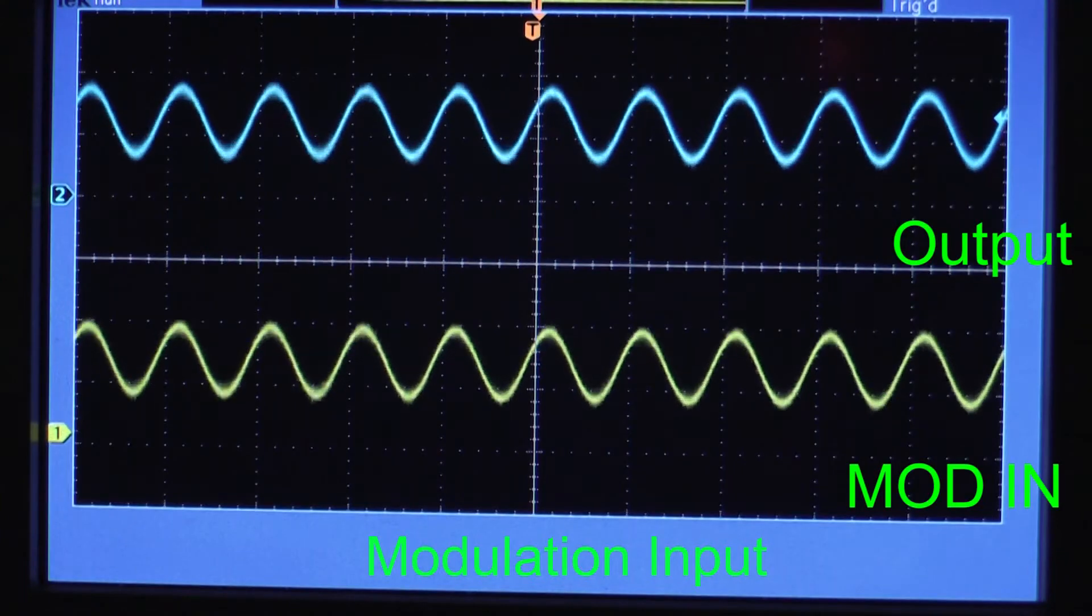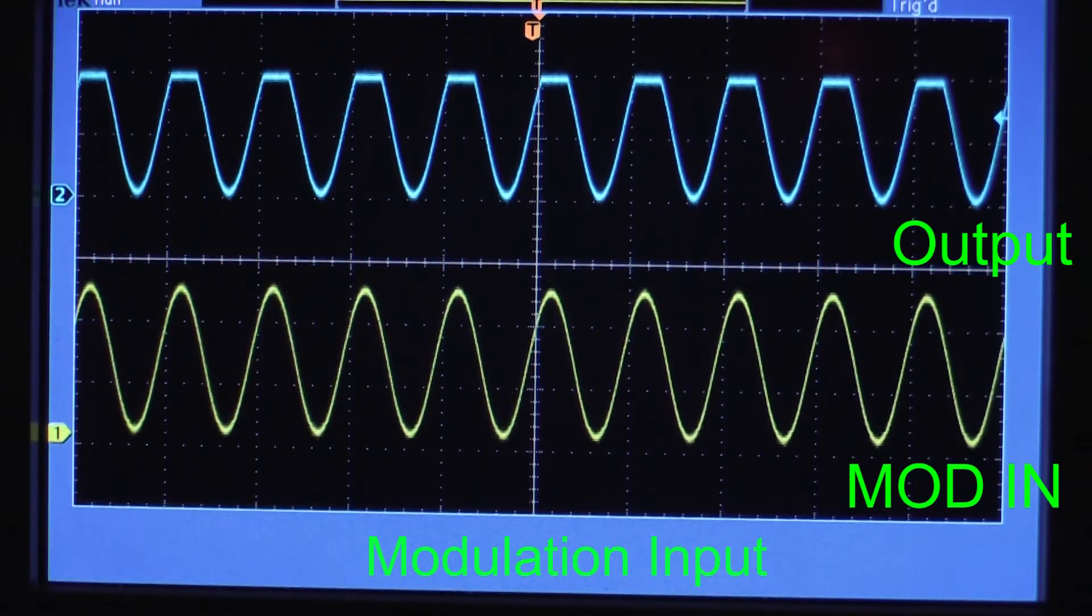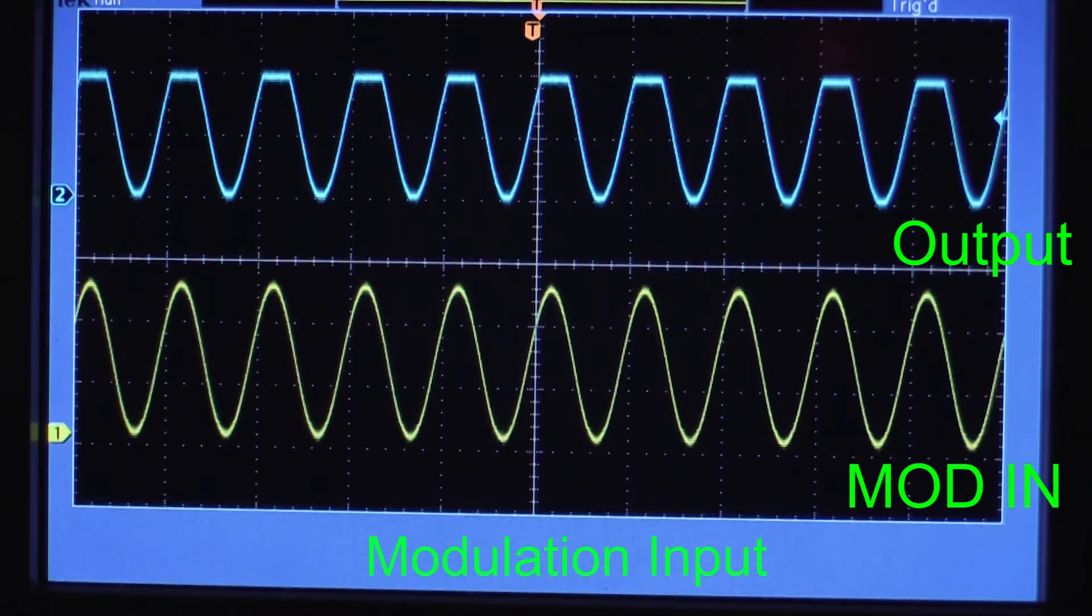An analog signal, for example a sine wave, triangle wave, or square wave, can be input to the laser diode driver.